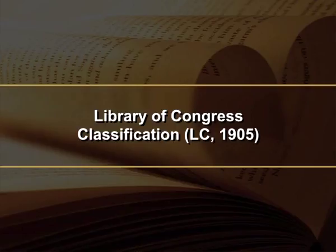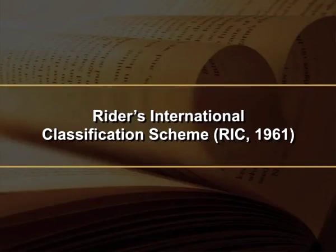Library of Congress Classification is a long schedule of 11,300 pages in 45 volumes. It enumerates all possible types of subjects of the past, the present and the future, and does not provide independent schedules of common isolates. There is no provision for synthesis of numbers. Notation consists of Indo-Arabic numerals and Roman capitals; the class numbers are monolithic. Rider's International Classification Scheme is a long single schedule enumerating all basic and compound subjects, enumerating about 18,000 subjects each represented by three digits. There are no separate schedules for common isolates, and therefore no possibility to construct class numbers.